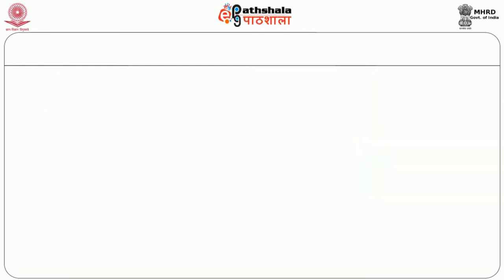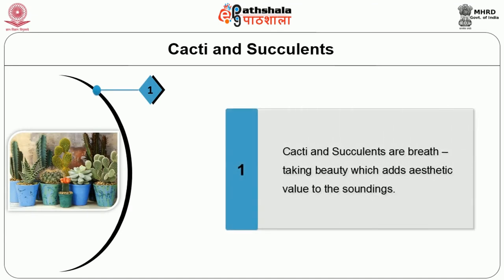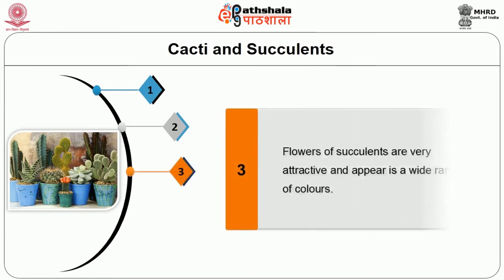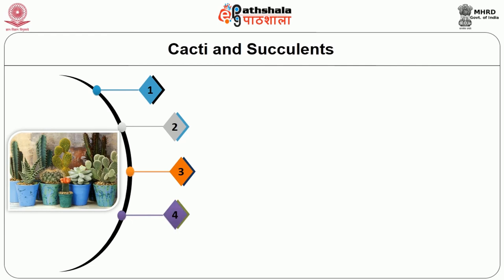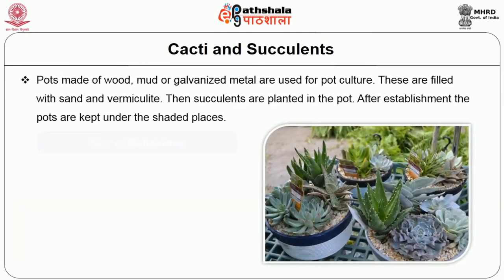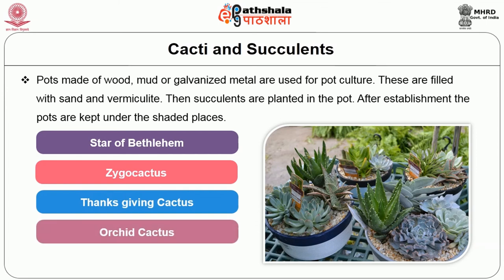We will see about cacti and succulents. Cacti and succulents have breathtaking beauty which adds aesthetic value to the surroundings. Plants with fleshy stems and leaves are called succulents. These are xerophytic plants that can withstand rough conditions. Flowers of succulents are very attractive and appear in a wide range of colors, waxy coats, various shapes and spines. Cacti and succulents are mainly cultivated in pots made of wood, mud or galvanized metal, filled with sand or vermiculite. After establishment, the pots are kept in shaded places. Various cacti and succulents used in gardening are star of Bethlehem, zygo cactus, thanksgiving cactus, orchid cactus, Easter cactus.